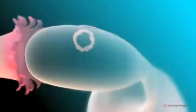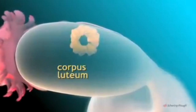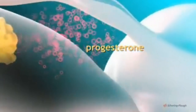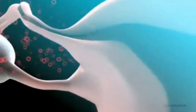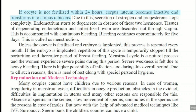The remaining tissue of the burst follicles forms the corpus luteum, a yellowish colored substance. The corpus luteum then starts to secrete the progesterone hormone. The endometrial glands secrete their secretion under the effect of progesterone, and such an endometrium is ready for implantation of the embryo. Now there are two options: either implantation occurs, or the ovum is not fertilized.